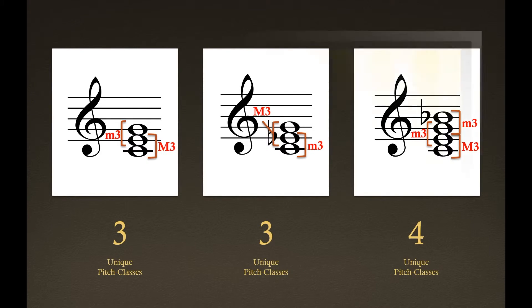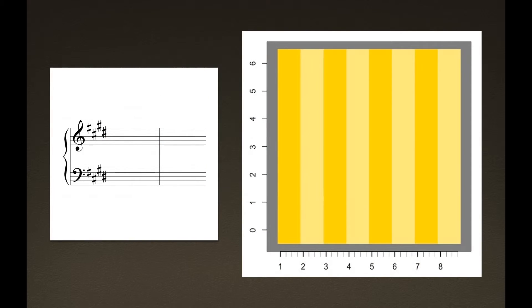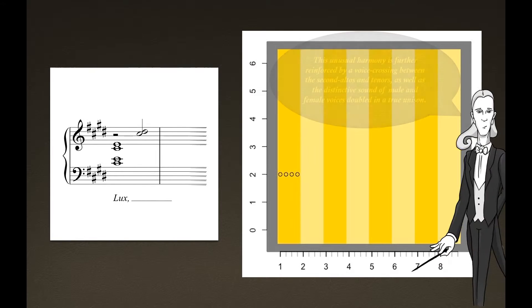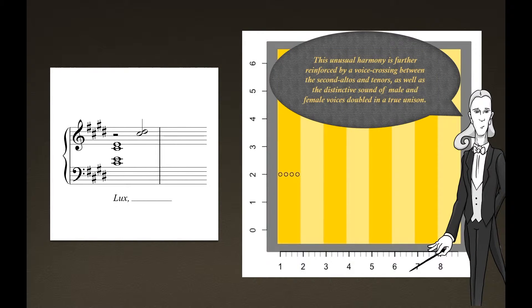However, from its onset, Lux Aurumque defies traditional harmonic expectations. Although the opening minor third hints at a tonic C-sharp minor triad, only two distinct pitch classes sound throughout the entire first measure.